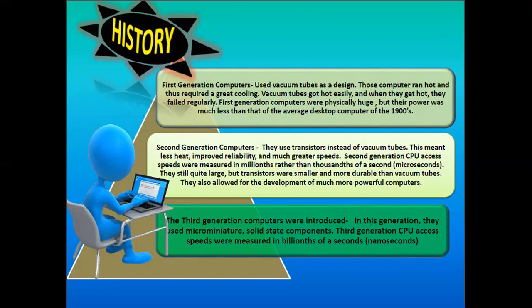The power of first generation computers was less than an average desktop of the 1900s. Second generation computers use transistors instead of vacuum tubes. They are more reliable, have greater speed, and conduct less heat. Second generation CPU access speed was measured in microseconds rather than thousands of a second. They are still quite large, but transistors were smaller and more durable than vacuum tubes, allowing for much more powerful computers.